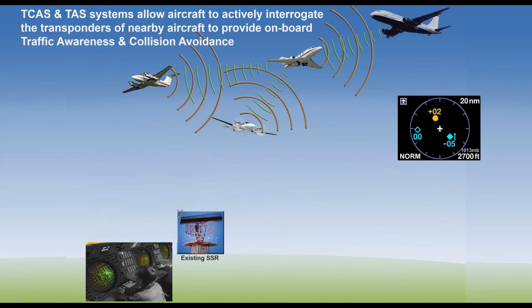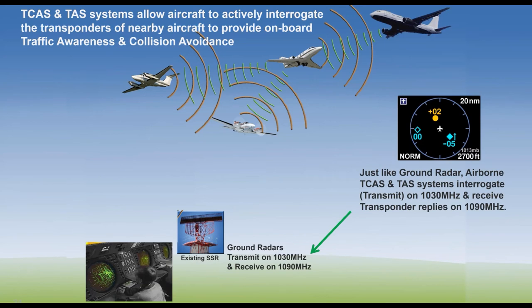The TCAS and TAS systems actively interrogate the transponders of nearby aircraft and provide on-board traffic awareness and collision avoidance. The TCAS airplane sends out a pulse — the air transport airplane interrogating a Citation, which replies back; the Citation sending pulses to a Baron, painting this traffic picture. Just like a ground radar, airborne TCAS and TAS interrogate on 1030 and receive transponder replies on 1090 megahertz.